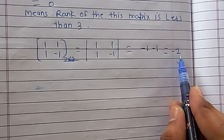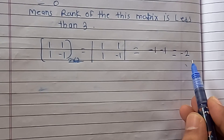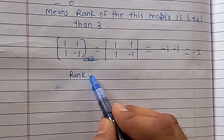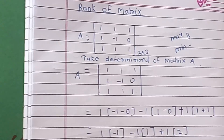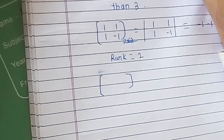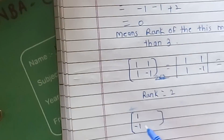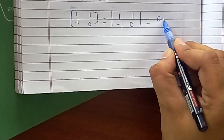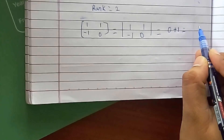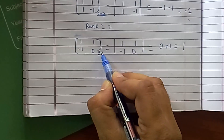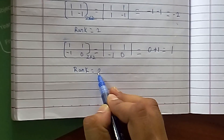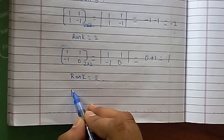This two by two matrix has a non-zero determinant value, meaning the rank of this matrix is two. For further confirmation, we take another two by two submatrix with entries one, minus one, minus one, one, minus one, one, zero, and its determinant also equals one — non-zero. Therefore, the rank of matrix A is 2.